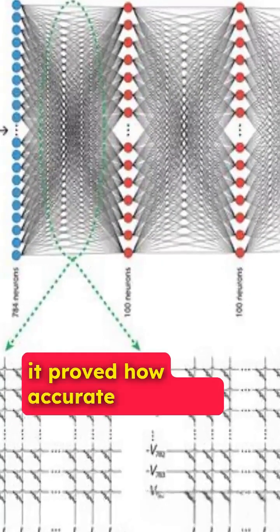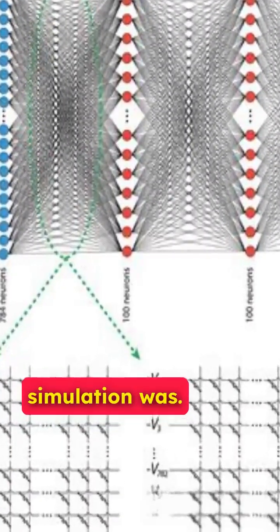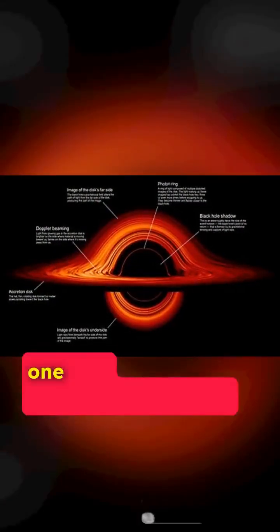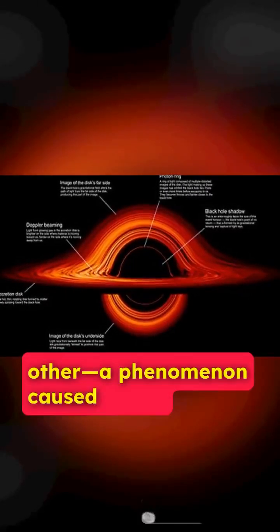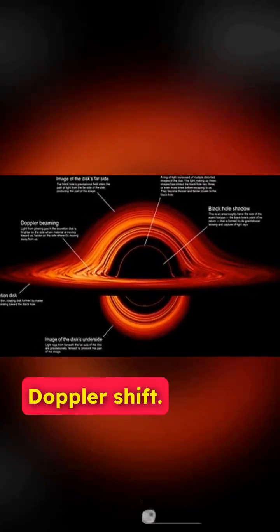Shockingly, it proved how accurate Luminet's simulation was. If you look closely, one side of the accretion disk appears brighter than the other, a phenomenon caused by the Einstein effect and Doppler shift.